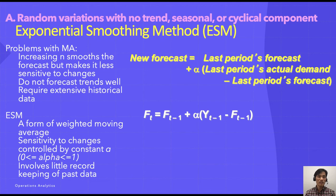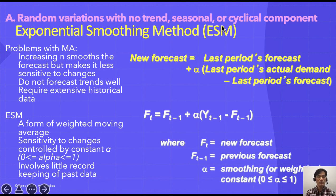The third method in dealing with random variations with no trend, no seasonal, and no cyclical component is exponential smoothing method. Here are some problems with moving average. As you increase the number of periods, the forecasting becomes less sensitive to changes. Moving average also does not forecast trends very well and requires extensive historical data. To complement these issues, management scientists proposed exponential smoothing method.